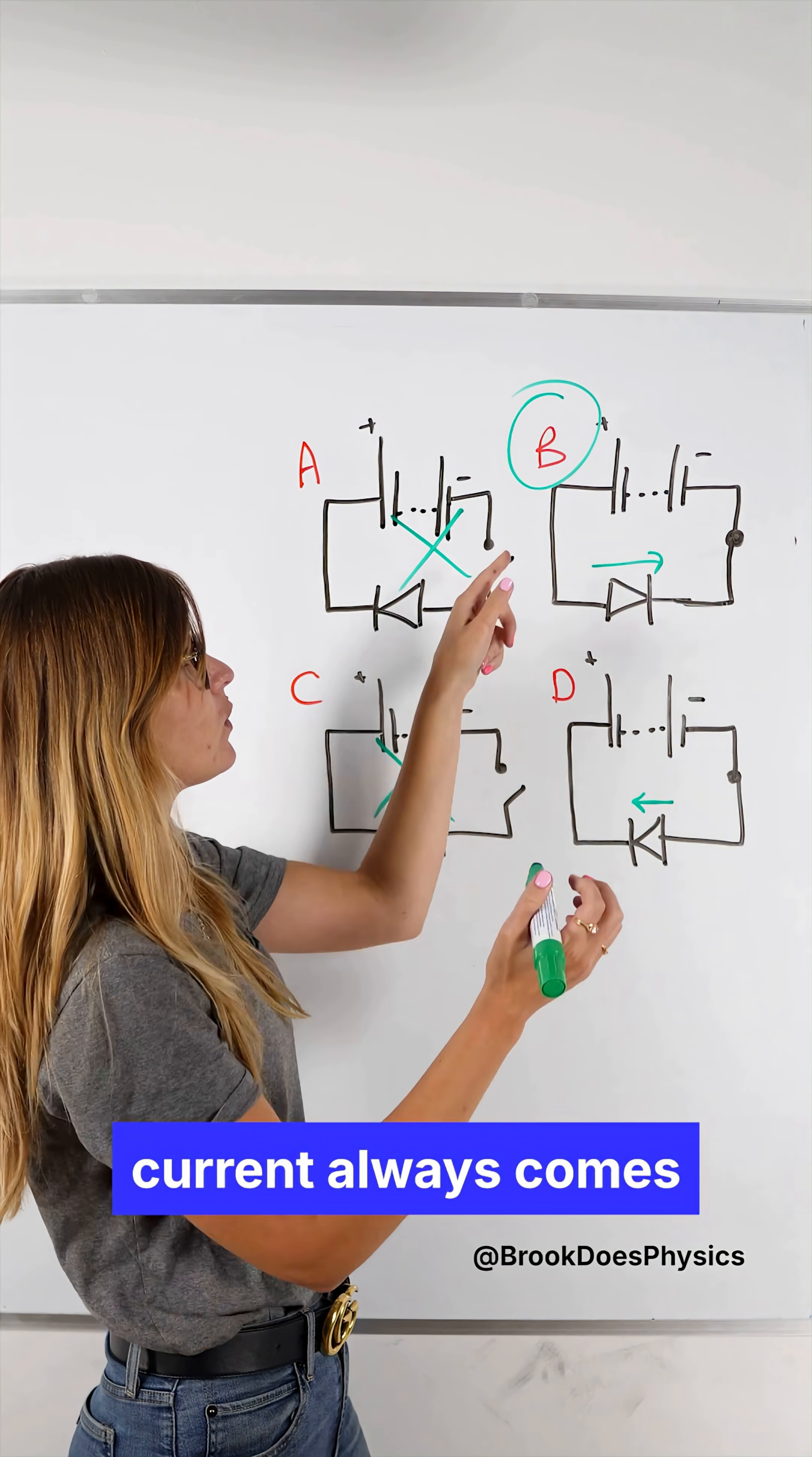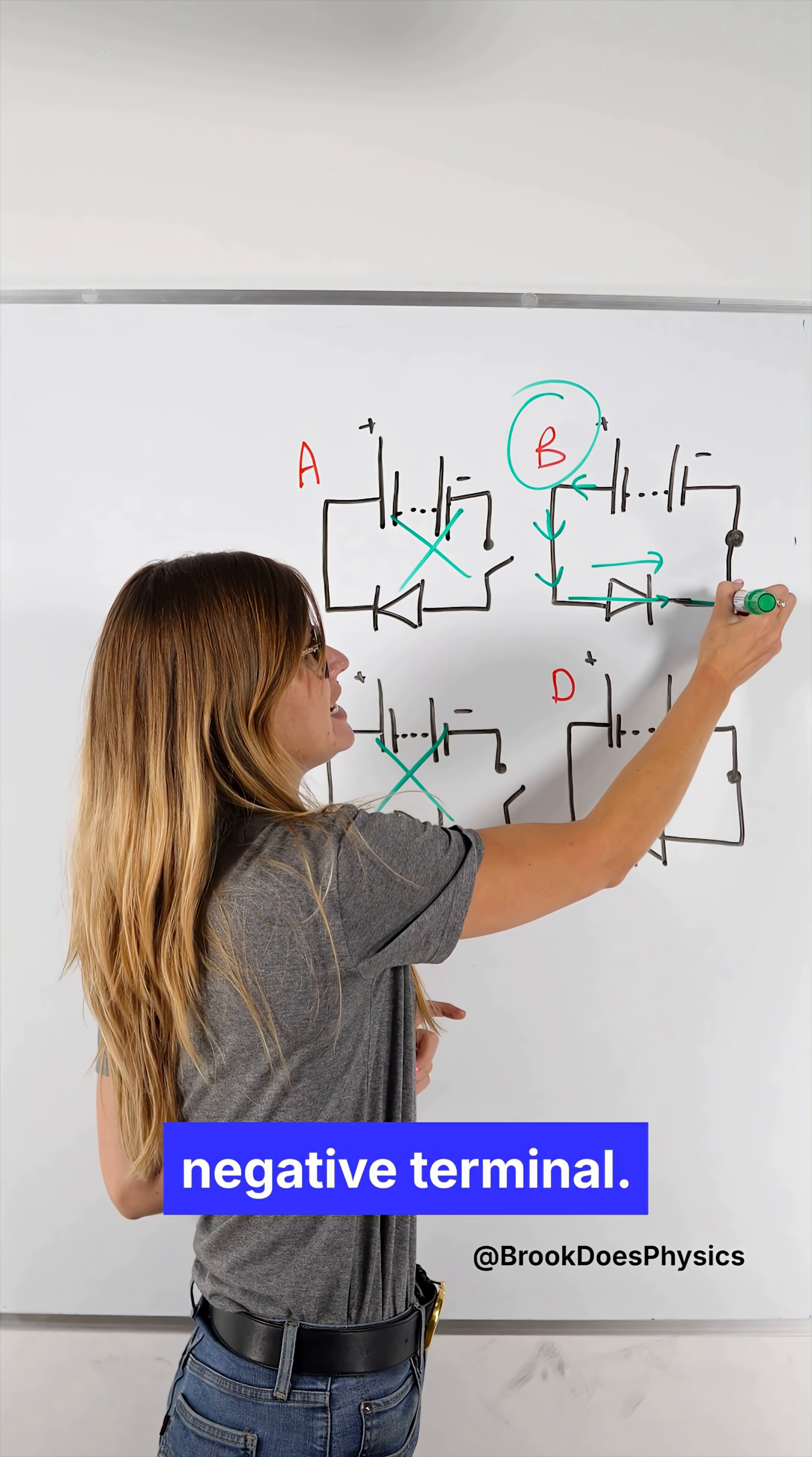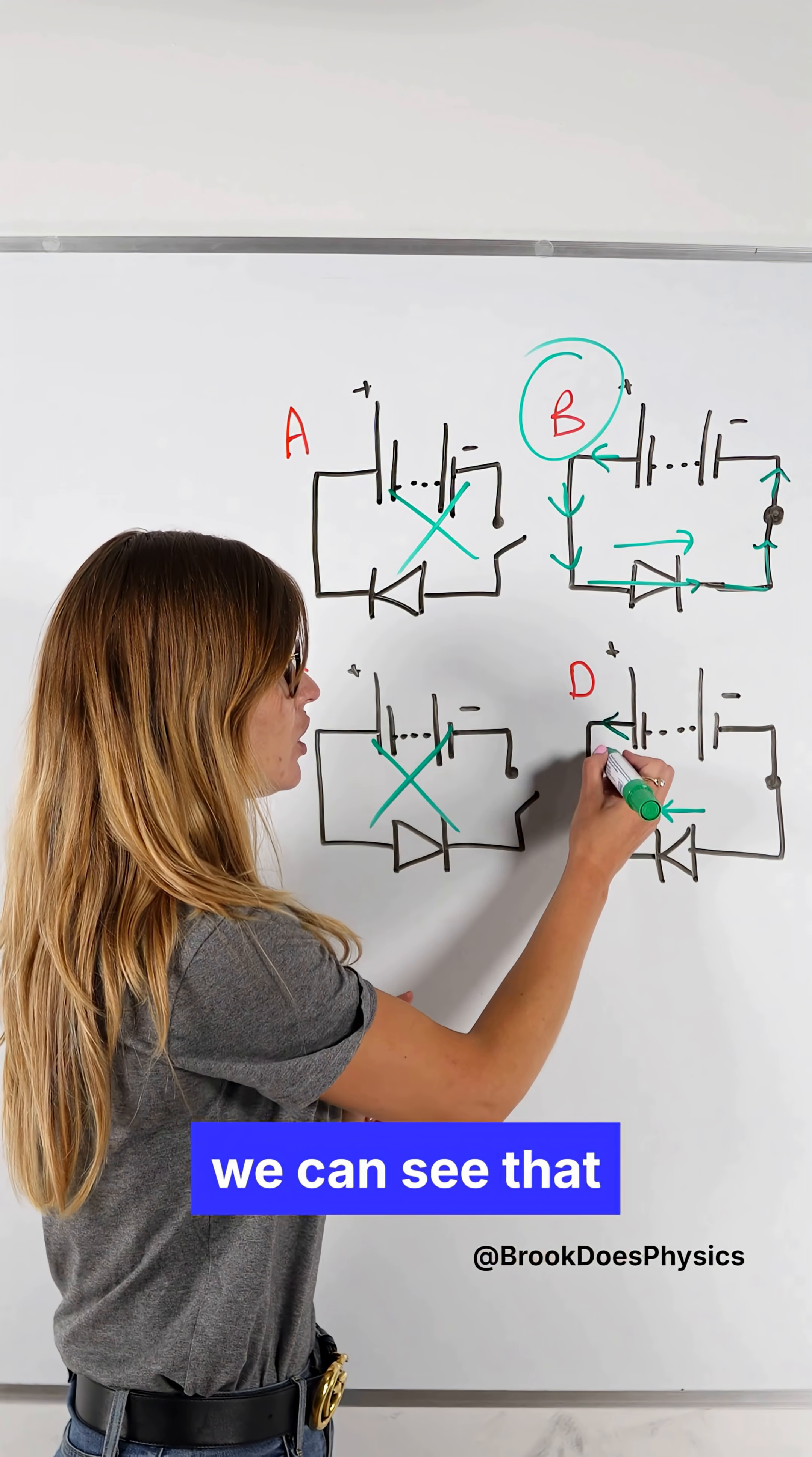Conventional current always comes out of positive and goes round towards that negative terminal. So here we can see the current flows in the same direction as that arrow.